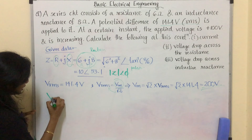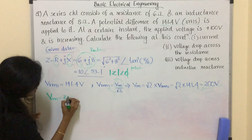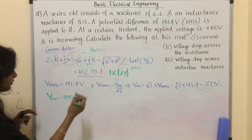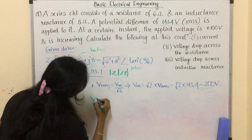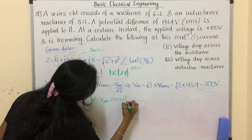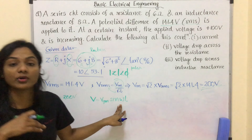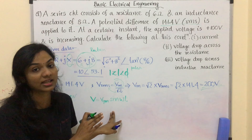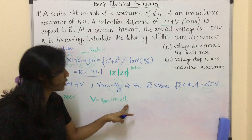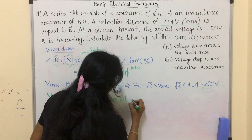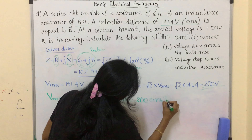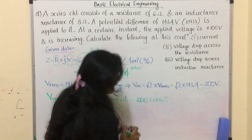We know that we represent any phasor value in the form of a sine wave, that is V = Vm sin(ωt). Considering it as a sine function, the applied voltage is V = 200 sin(ωt).